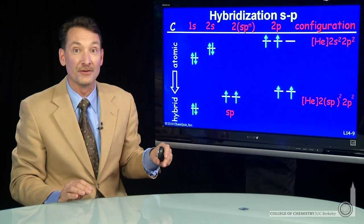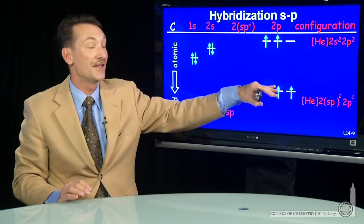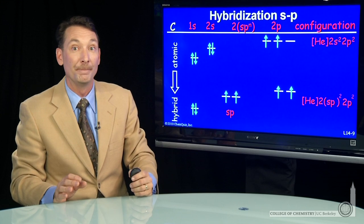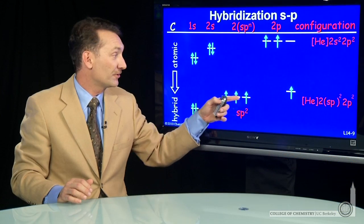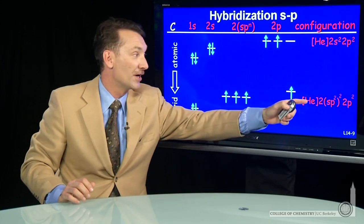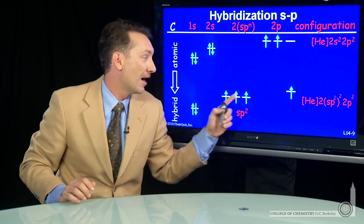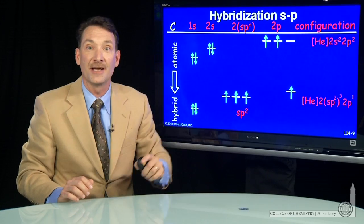The sp orbitals are intermediate in energy between the 2s and the 2p that form them. I can continue the process if I take and form sp2 orbitals out of an s and two p's. Then there'll be three electrons there. Those orbitals are all equivalent. They point at 120 degrees from each other. And that electronic configuration will be sp2 now, sp2 with three electrons and one electron left in the p.